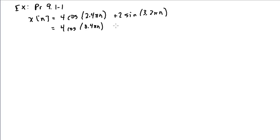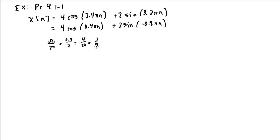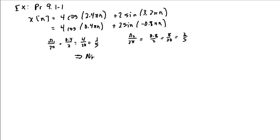We can write the cosine as cosine of 0.4π n, and the sine as minus 0.8π n. For the period of each: ω₁ over 2π is 0.4 over 2, which equals 1/5, giving a period of 5. For the second signal, ω₂ over 2π is 0.8 over 2, which equals 2/5, which also has a period of 5. So the smallest period is 5.